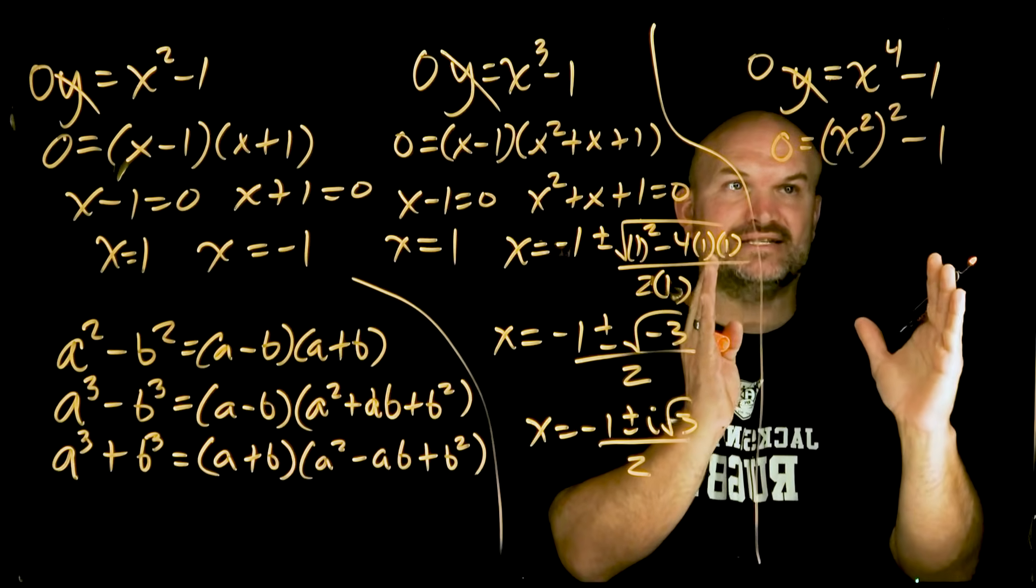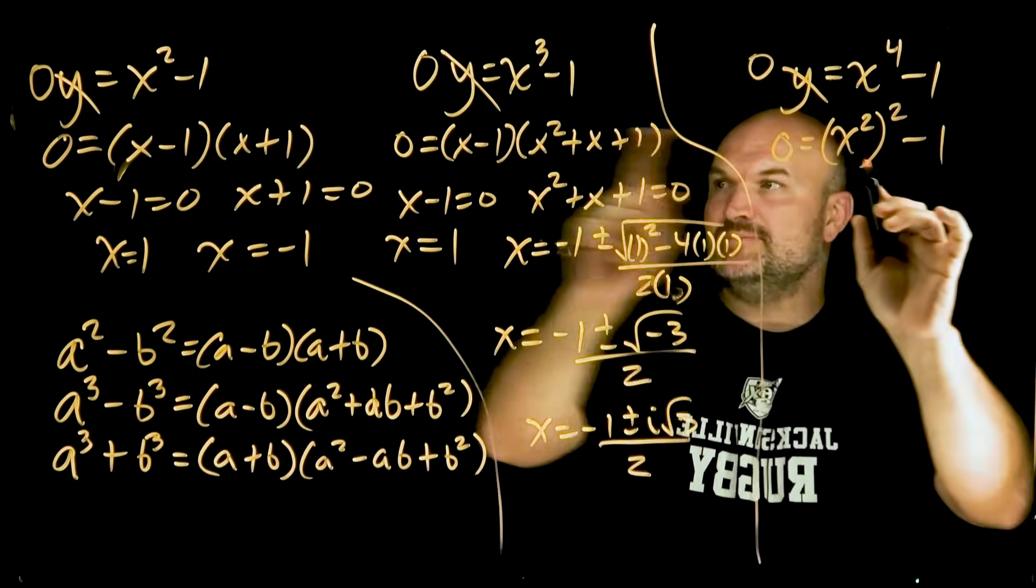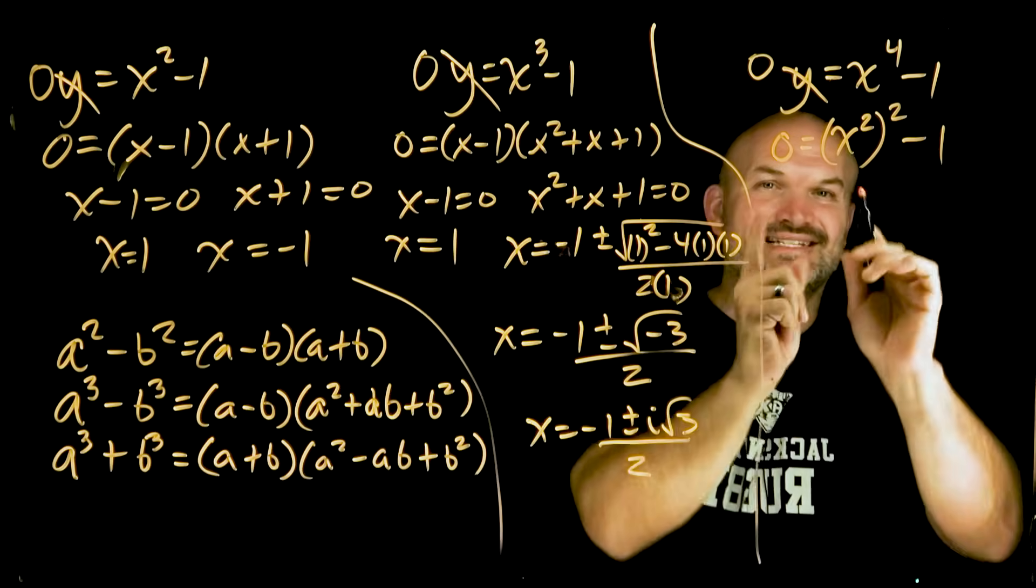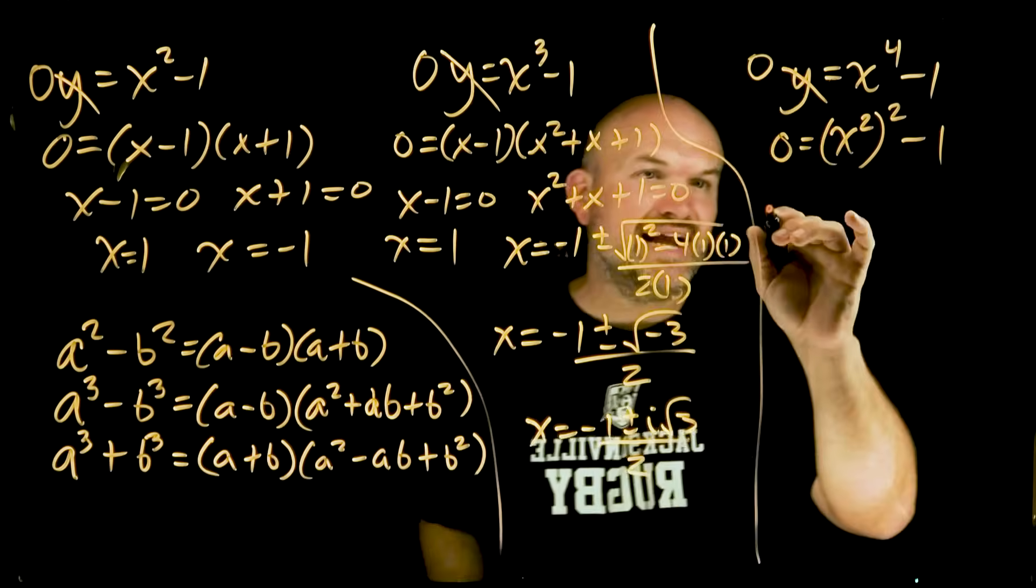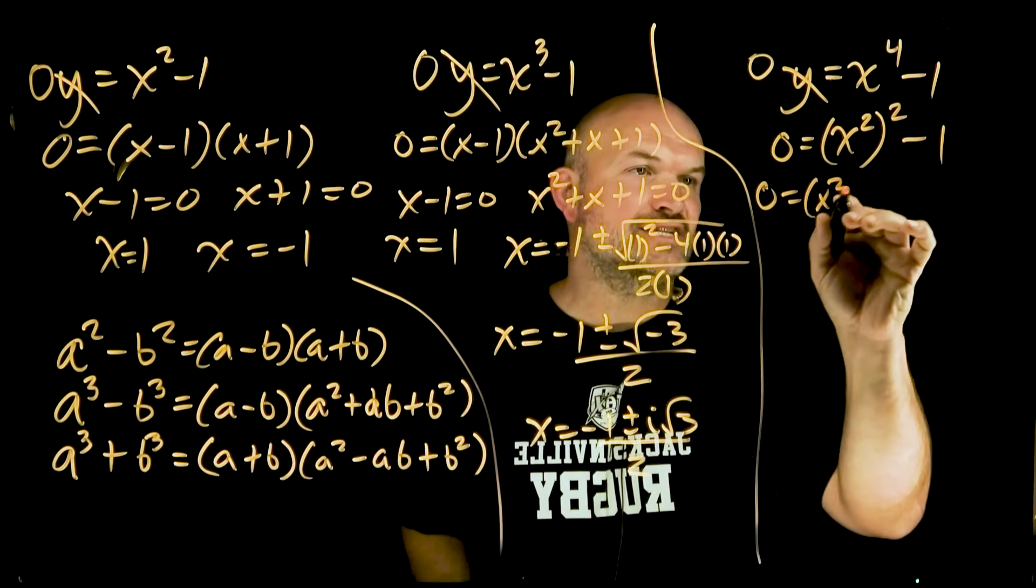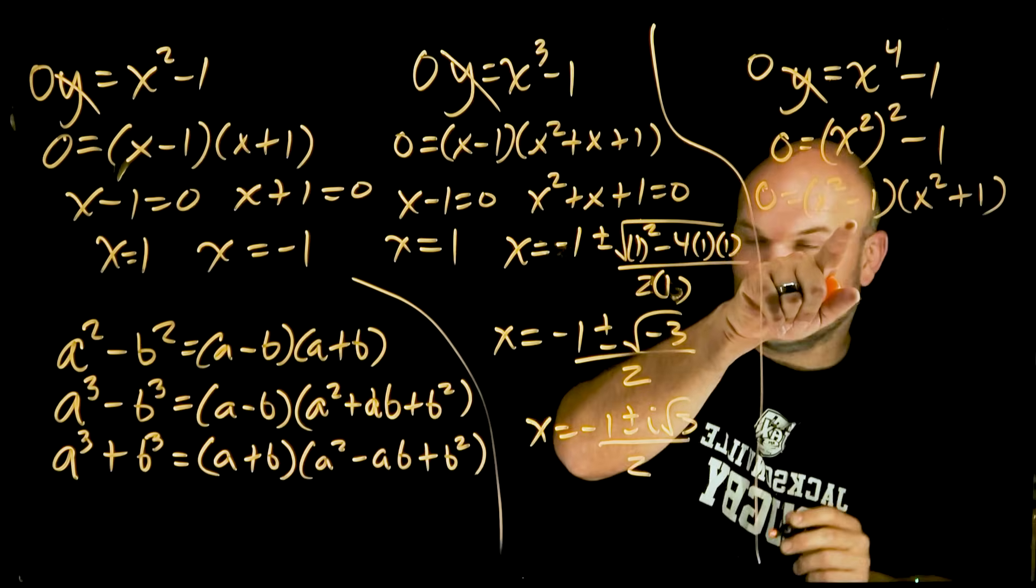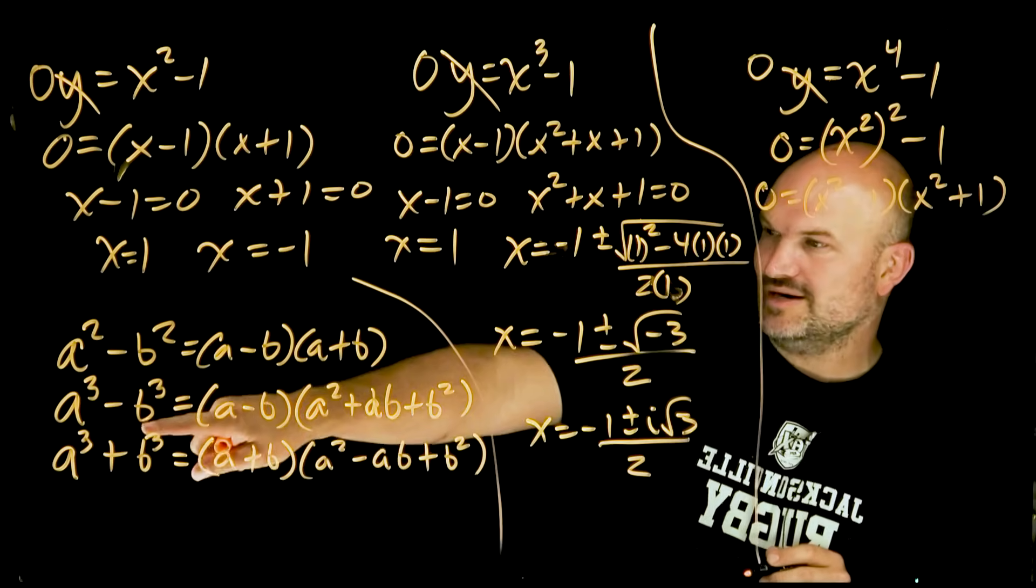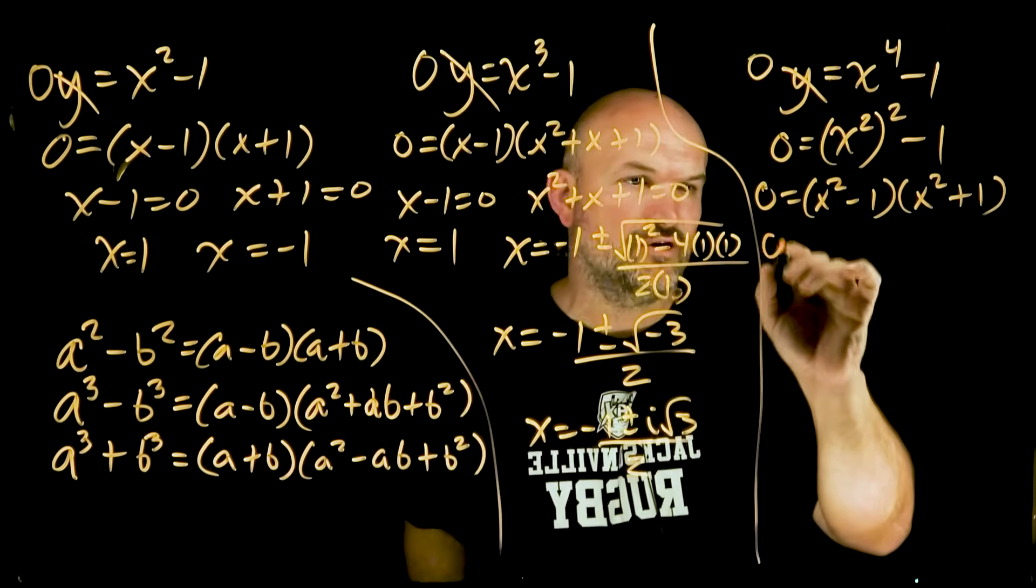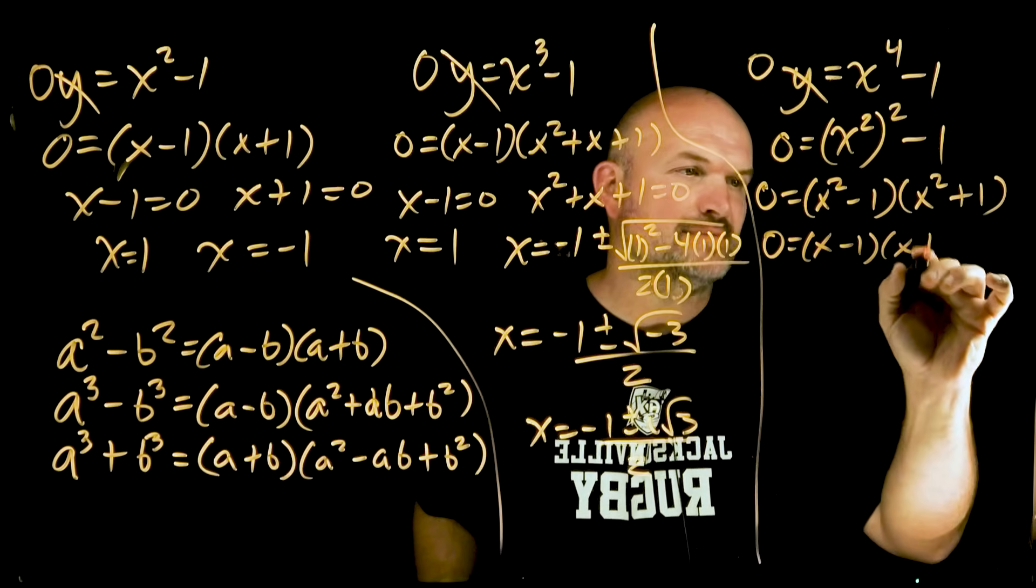Now, what I want you to recognize and say, oh, this is actually the formula of difference in two squares, but rather being x squared minus one squared, it's x squared minus one. So I can still rewrite this in factored form. It's going to look like x squared minus one times x squared plus one. Now I want you to see, hey, we have this x squared minus one. I already know what that factored form is. That's going to be x minus one times x plus one.